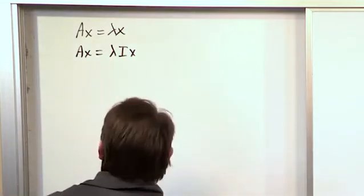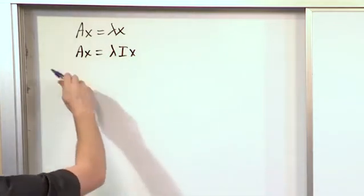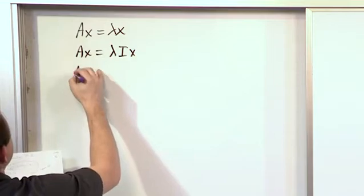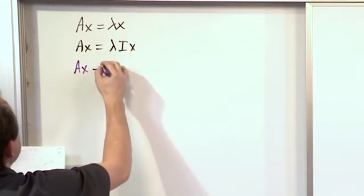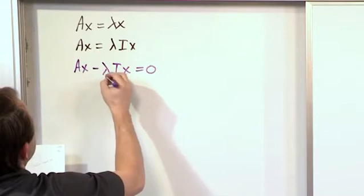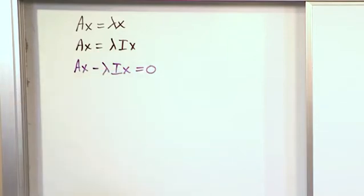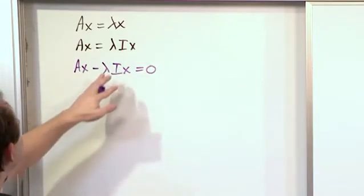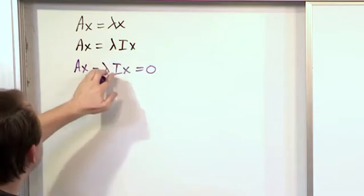And then what you can do is you can take all of these terms and move them over to the left-hand side by subtraction. So you'll get Ax minus lambda times Ix is equal to zero. So far, this is just basic algebra. There's no linear algebra involved in it. I'm just multiplying by one. I'm subtracting it over.